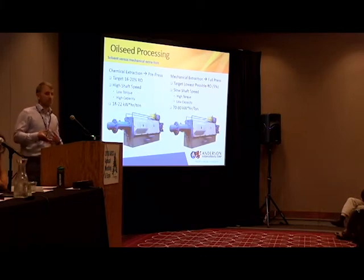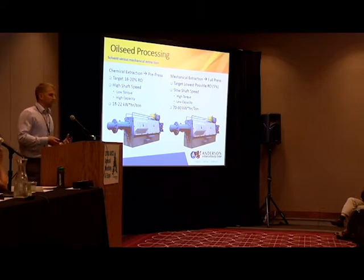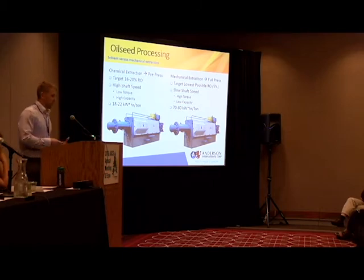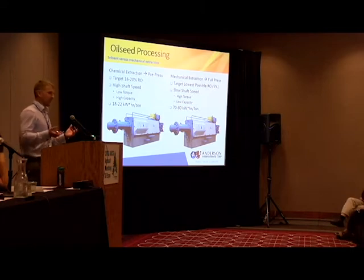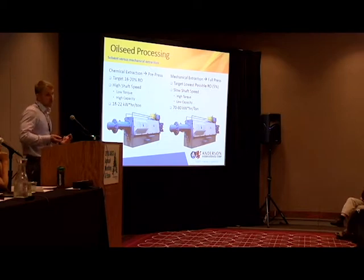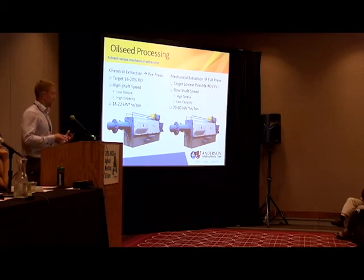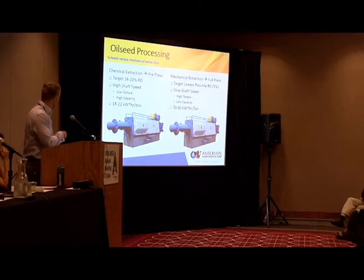The screw press can be used in both processing methods, and the machine doesn't really change much. All that changes is going back to that fundamental principle: the faster you rotate, the softer you squeeze. In pre-pressing for solvent extraction, it's used on high-oil-content materials that aren't soybean — all extractors are designed for soybean. Anything that's not soybean, you have to pre-press down to 20 percent oil before going into extraction. For full pressing, you rotate slower and squeeze harder, getting down to five to six percent residual oil in your meal. The difference in operating costs in electrical energy is about four times as much to full press versus pre-press.